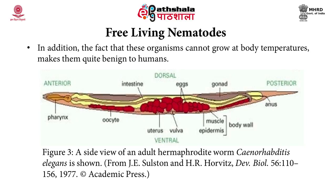The various parts can be clearly observed in the diagram which shows pharynx, oocyte, intestine, uterus, vulva, eggs, body wall, gonad and the anus labeled from anterior to the posterior end.